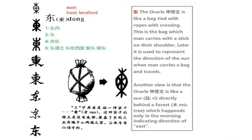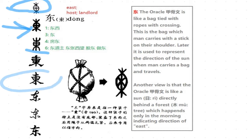You can see 东 here. The first one is the oracle image. Later, 金文, and this is 小篆. The fourth one is called 隶书, and this is the traditional Chinese 楷体, normal form, and this is actually what we use today — the simplified form.